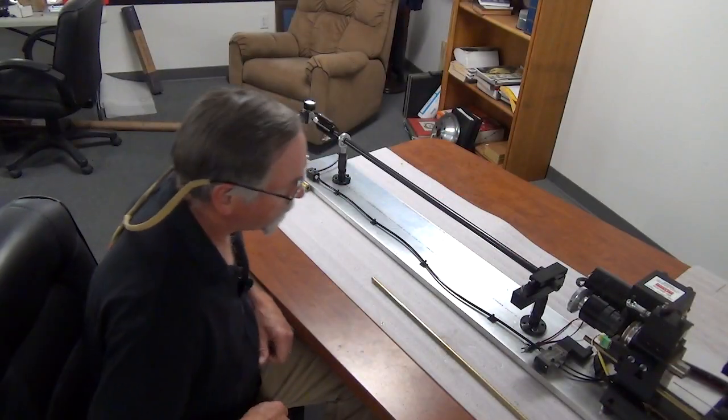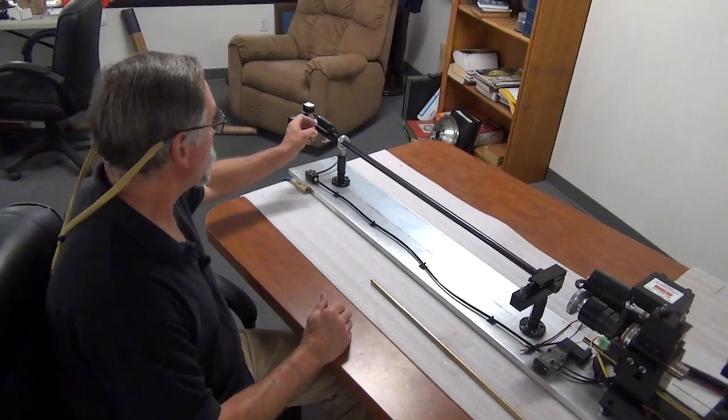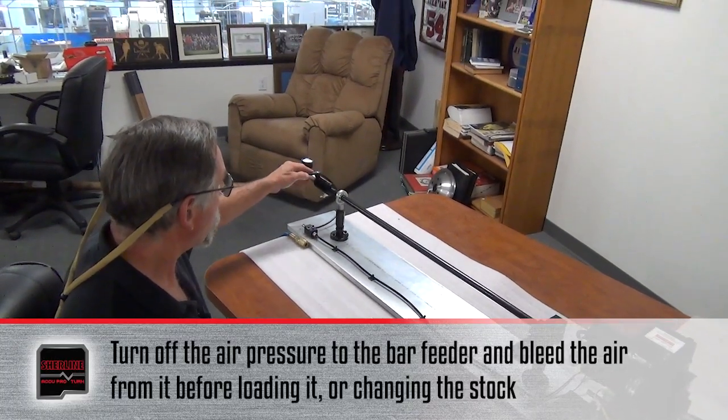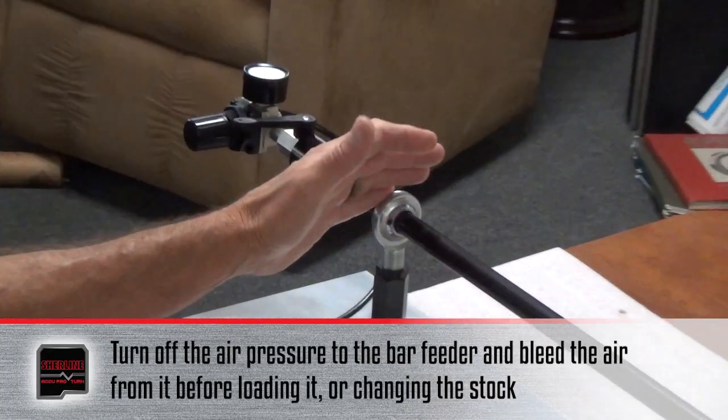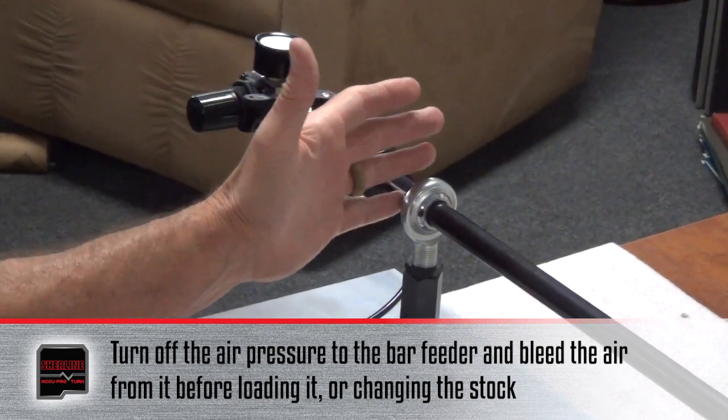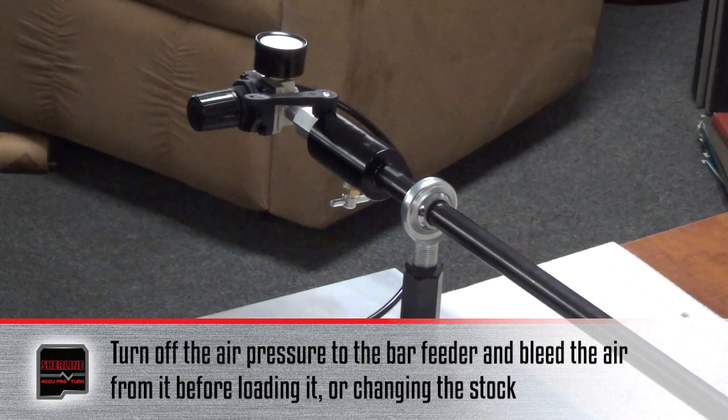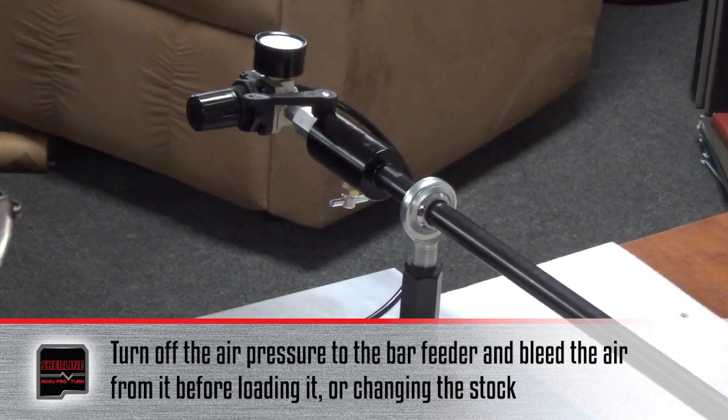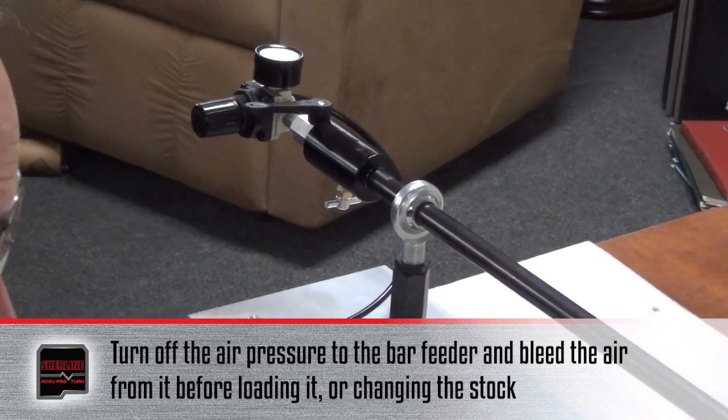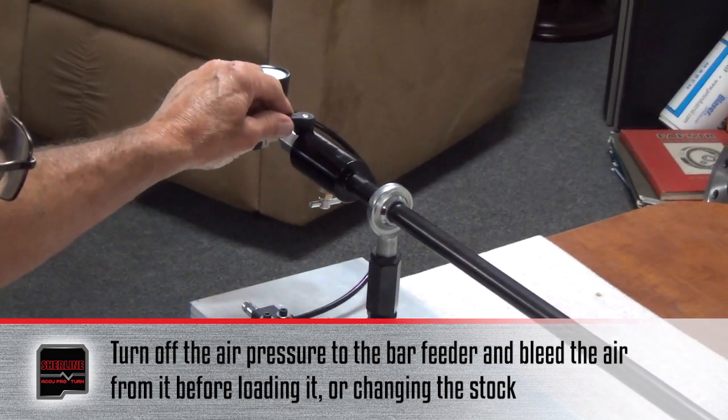To load the bar feeder, first thing you want to do is turn your air pressure off to the bar feeder. At 30 PSI it might not sound like a lot, but if you activate it with the bar in there it will send your bar flying. So that's the first thing you do is turn it off there.